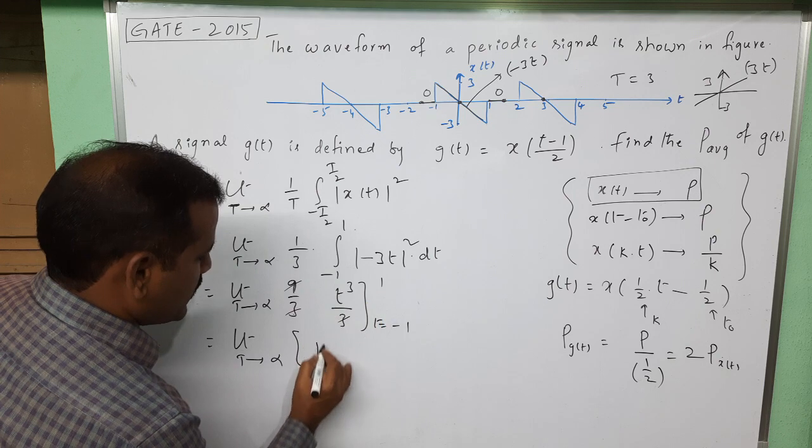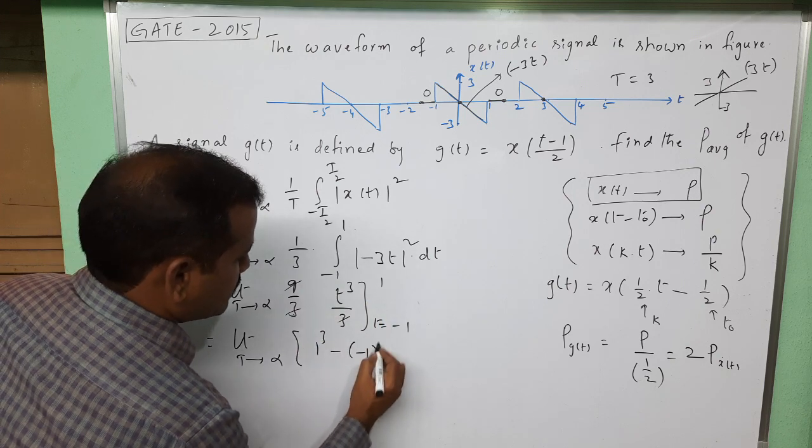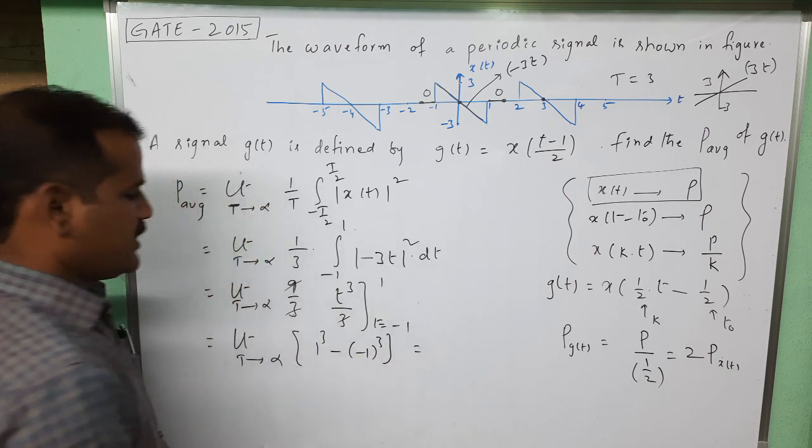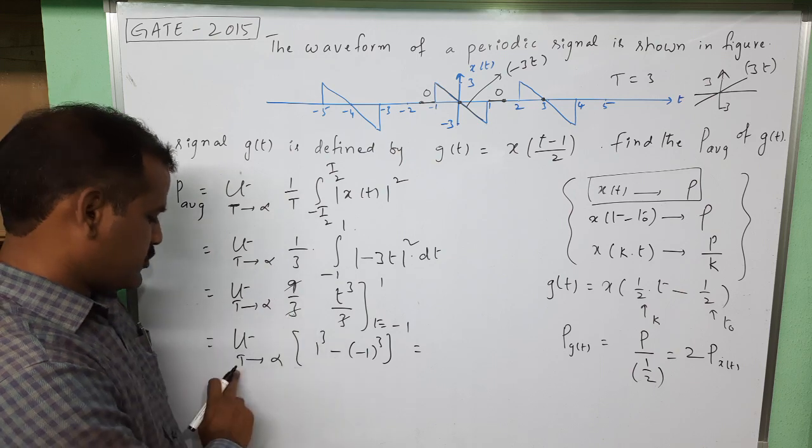So this is 1³ minus (-1)³. Here there is no T to substitute T tending to infinity, so in this expression only a constant is there, no capital T.